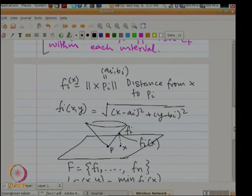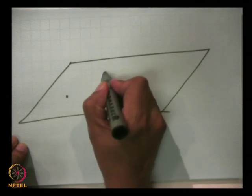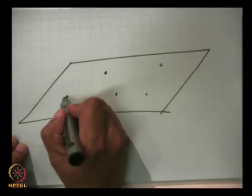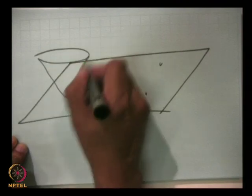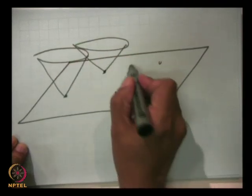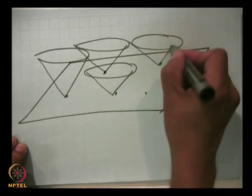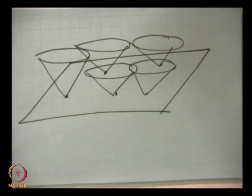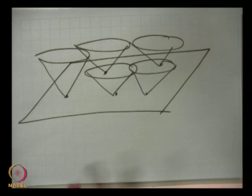One way of thinking about this is: you draw these cones around each point — these are finite cones but they extend to infinity. You look from below, you see some surface — that is called the Voronoi surface. You project it down onto the plane and you get the Voronoi diagram.